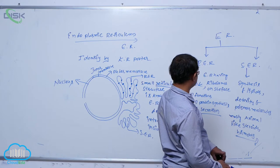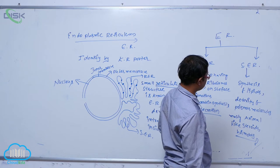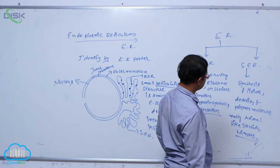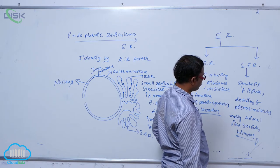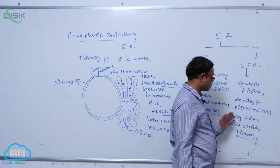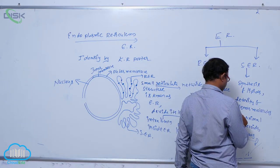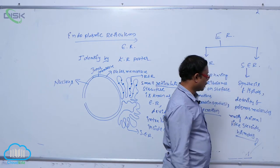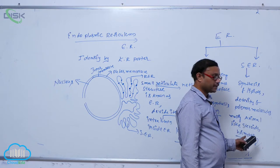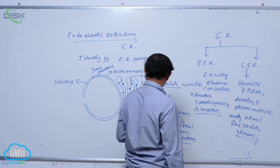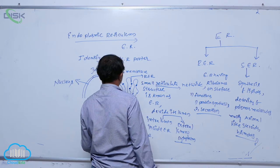To summarize: RER has ribosomes on its surface and functions in protein synthesis and secretion. SER functions in lipid synthesis, detoxification of poisonous molecules, and synthesis of animal steroids and hormones. That is the endoplasmic reticulum.